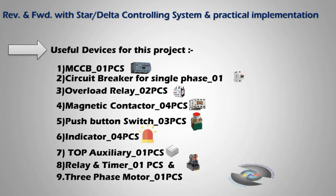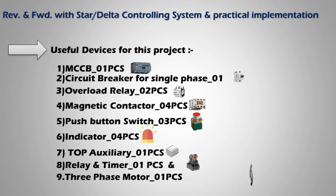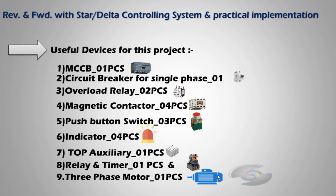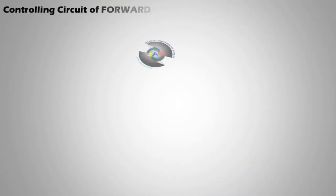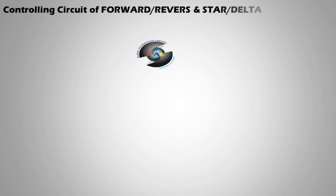To summarize the devices: MCCB, circuit breaker for single phase, overload relay — two phases, magnetic contactor — four phases, push button — three phases, indicator — four phases, timer auxiliary — single piece, relay and timer — single piece, and the three-phase motor. This three-phase motor is our main load; we use all these functions for it. This is the main topic — the controlling circuit for forward, reverse, and star-delta.